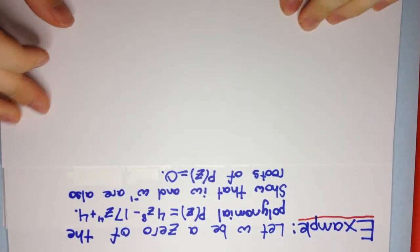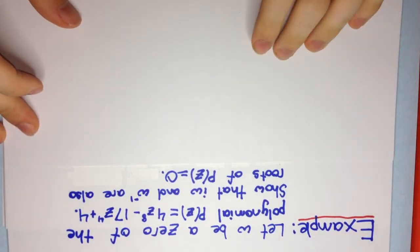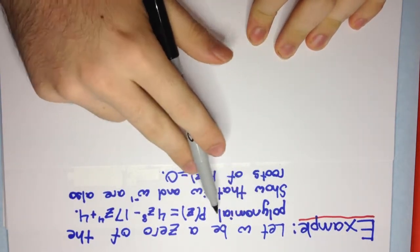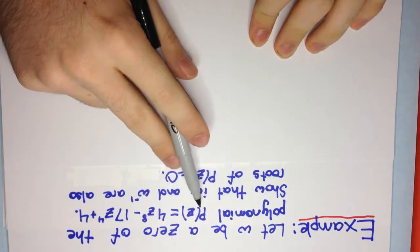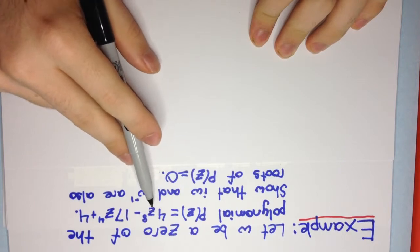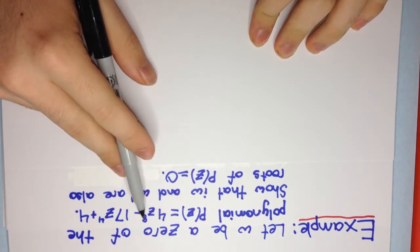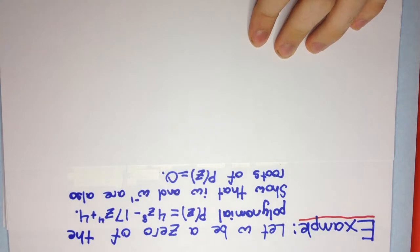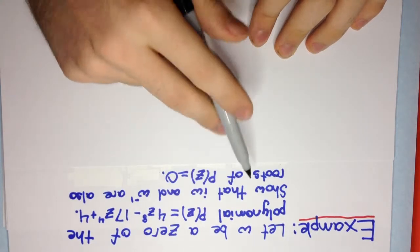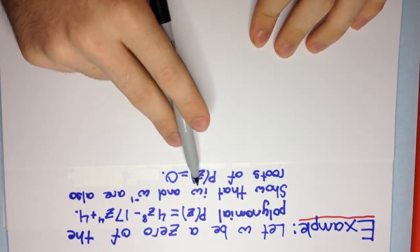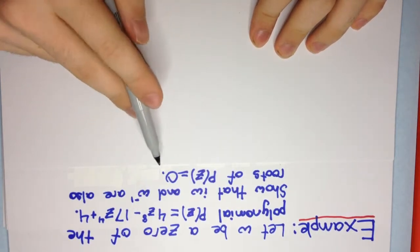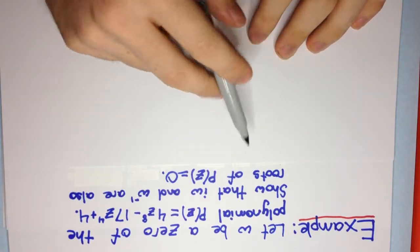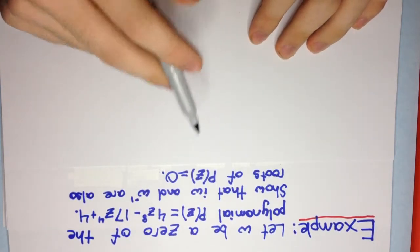Welcome to today's video. The example in this video is: let ω be a zero of the polynomial p(z) = 4z⁸ - 17z⁴ + 4. Show that iω and 1/ω (or ω to the power minus 1) are also roots of p(z) = 0.